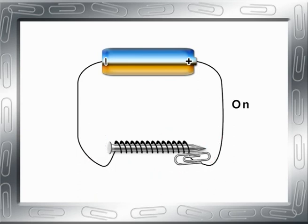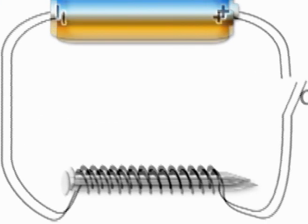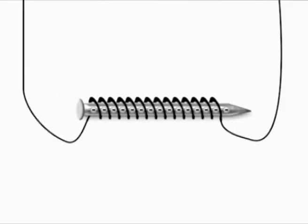And atoms of iron in the nail line up in the same direction to strengthen the force even further. In fact, the reason iron objects can be turned into magnets is because they contain electrons that can be lined up to spin in the same direction, and so create a magnetic force field.